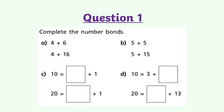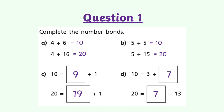Right, let's talk about these answers — some nice simple number bonds to 10 and 20. 4 and 6 is 10. 4 and 16 is 20. 5 add 5 is 10. 5 add 15 is 20. 9 and 1 equals 10. 19 and 1 equals 20. 10 equals 3 add 7, and 20 equals 7 add 13. Hopefully that's got you a bit warmed up and you're thinking about your number bonds now.